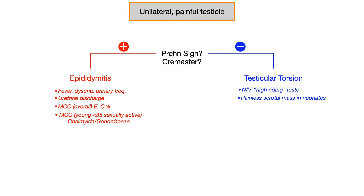Prehn's sign: P for Prehn, P for push — you push or lift the scrotum up. If that relieves the pain, that's a positive Prehn's sign. Cremaster reflex: you stroke the medial thigh, just at the top of the thigh below the scrotum, and if the testicle retracts, that's a positive cremaster reflex.